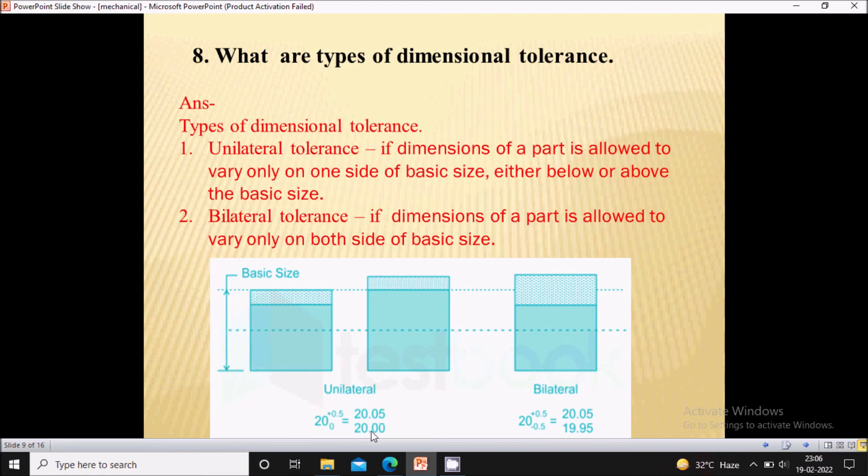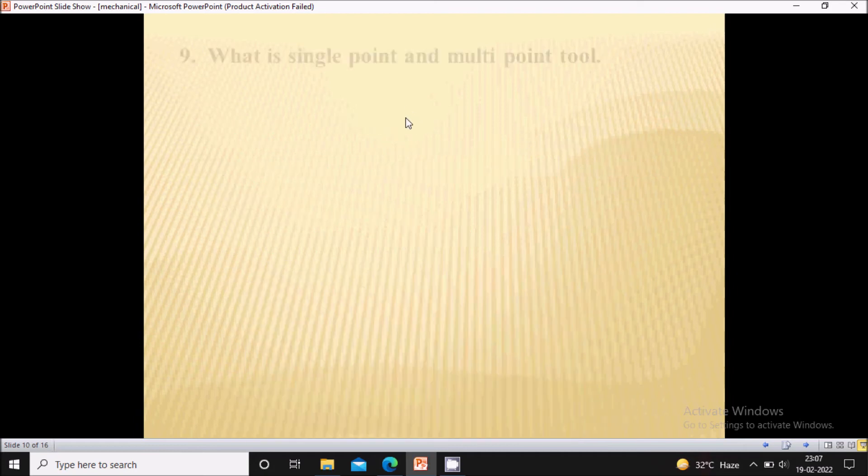Here you can see the example of dimensional tolerance. So here variation is allowed in only one side of the basic size, which is the positive side over here that is 20.05. Now second bilateral tolerance. If the dimension of part is allowed to vary only on both sides of the basic size, then it is called as bilateral tolerance. So here you can see the example of bilateral tolerance where the tolerance is given on positive as well as negative sign. That is the bilateral tolerance.